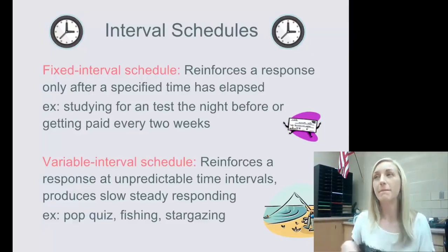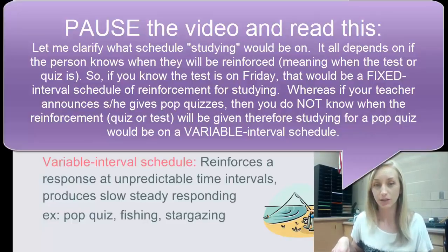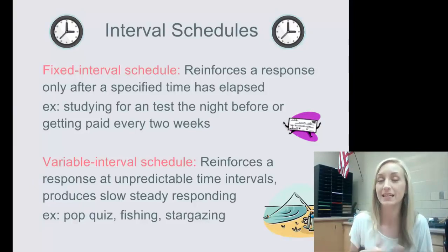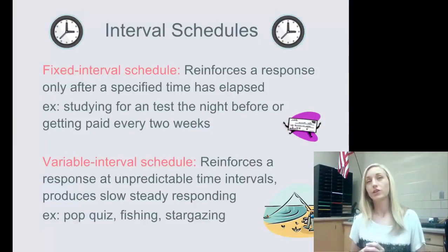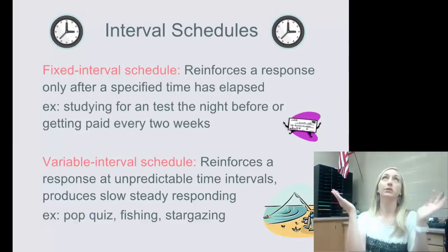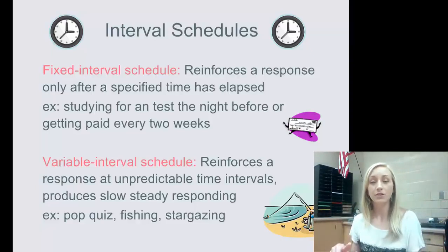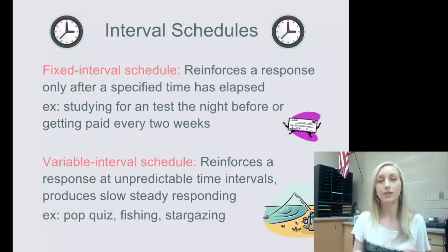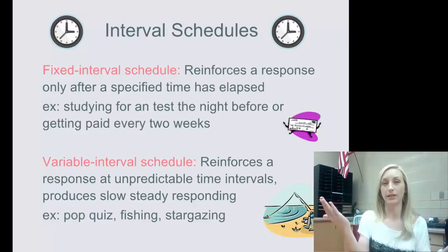A pop quiz is variable interval because it's also about the amount of time you spend studying your material. Fishing or stargazing are other examples — you don't know when you'll catch a fish or see a shooting star, making it variable. It's interval because it's the amount of time you spend fishing or stargazing.